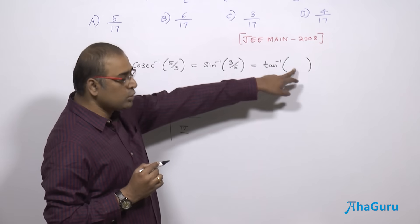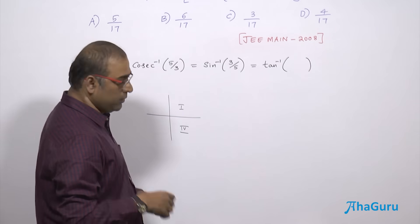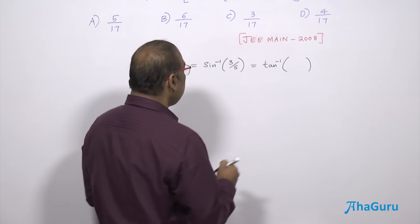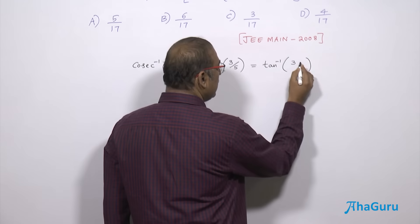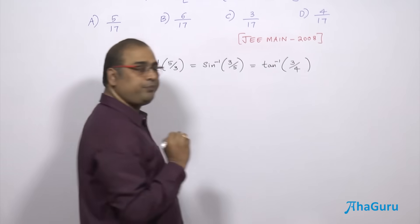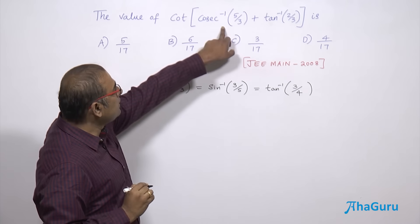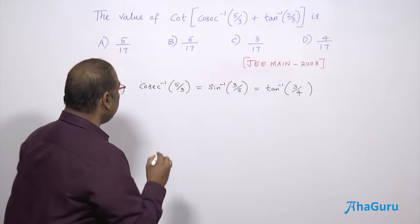Therefore, the tan inverse is also going to be a positive fellow. So it's going to be tan inverse of 3 by 4. So this cosecant inverse of 5 by 3 is tan inverse of 3 by 4.